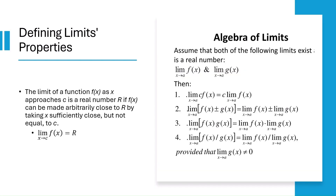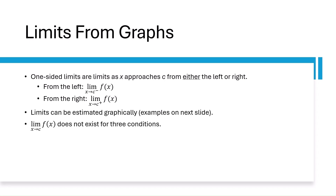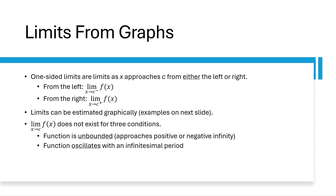Limits follow predictable rules. You can break limits across addition, subtraction, multiplication, and division, provided the individual limits exist. This allows for simplifying complex expressions and helps evaluate limits systematically. To find limits using graphs, observe what y value the function approaches as x approaches a given point from both sides. If both sides match, the limit exists and equals that value. If they don't match, or oscillate, or approach infinity, the limit does not exist.